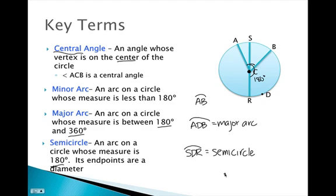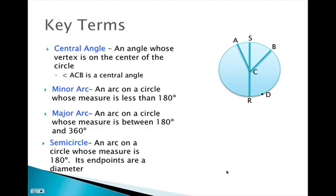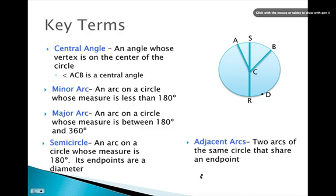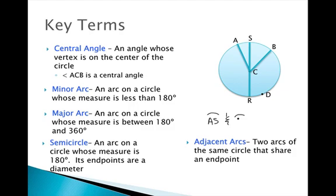One last term to go over: adjacent arcs. Adjacent arcs are two arcs of the same circle that share an endpoint. For example, arc AS and arc SB are adjacent arcs because they both share the endpoint S.